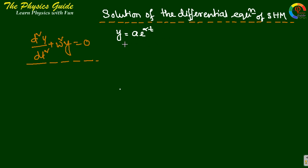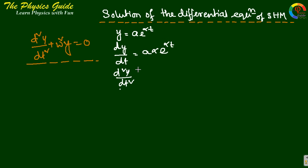This is the auxiliary equation. The first derivative dy/dt equals aα·e^(αt), and the second derivative d²y/dt² equals aα²·e^(αt).